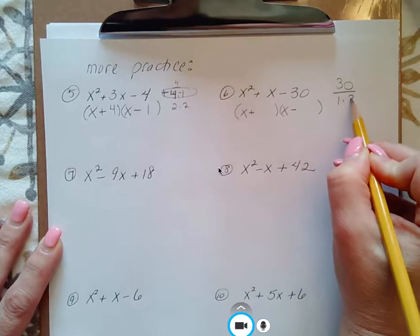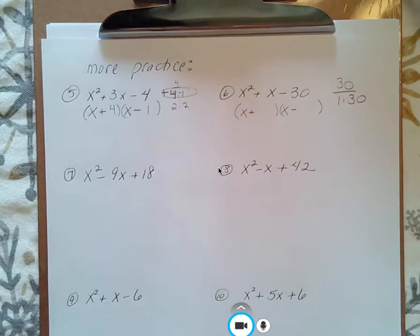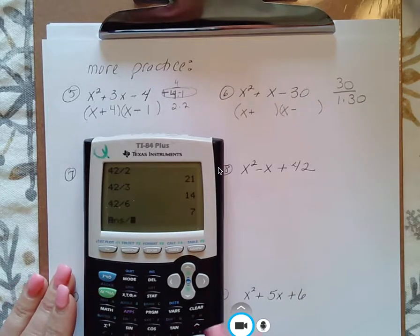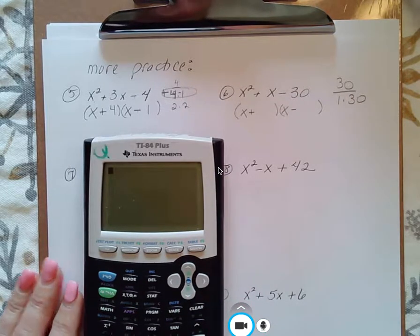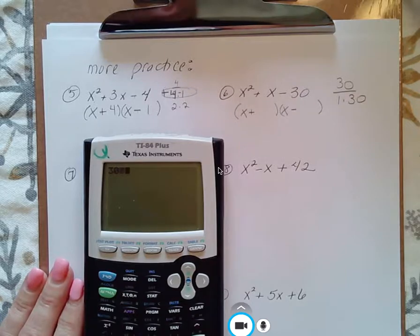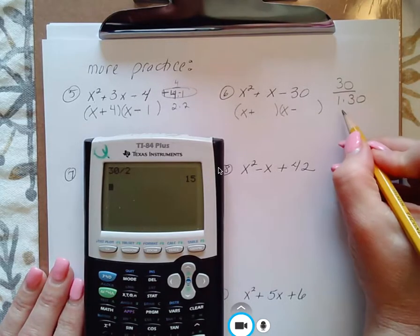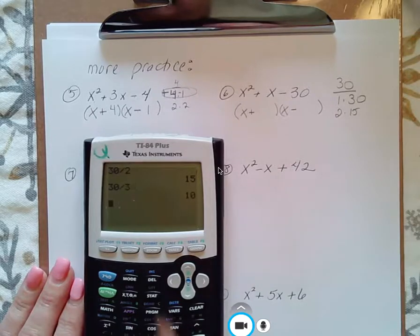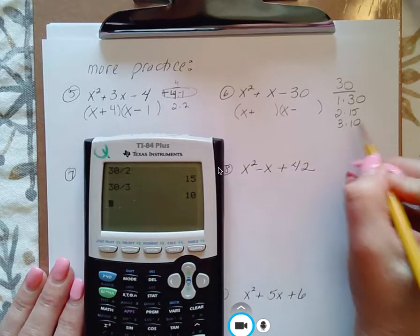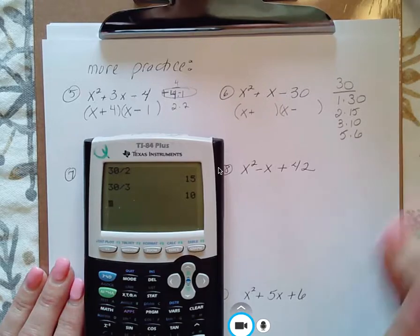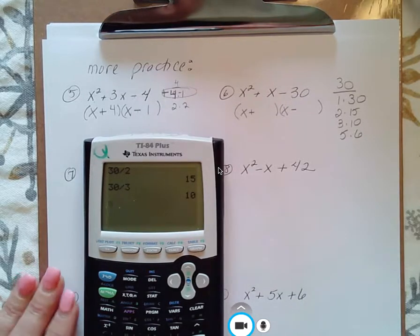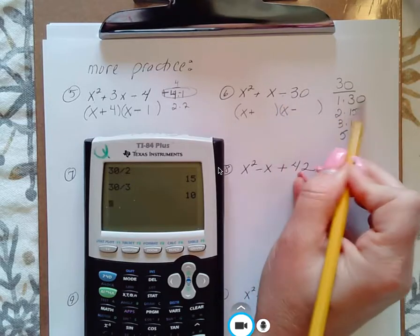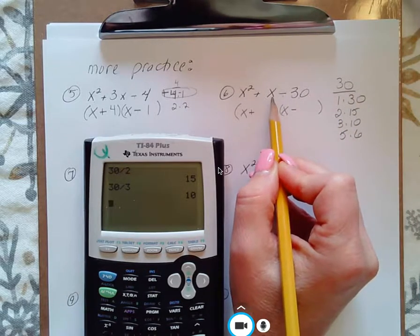So 30 is one times 30. If the numbers don't come to you, remember, you can always use your calculator. So we can do 30 divided by 2. That's 2 times 15. 30 divided by 3, that's 3 times 10. And then I do know that 5 and 6 is another pair of numbers. So now I'm multiplying to get 30, subtracting these guys to get x.